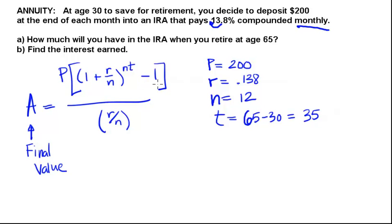We're going to take that quantity and subtract 1 from it, multiply it by P, and then divide all of that by this same ratio that we have up here, which is our rate divided by n.